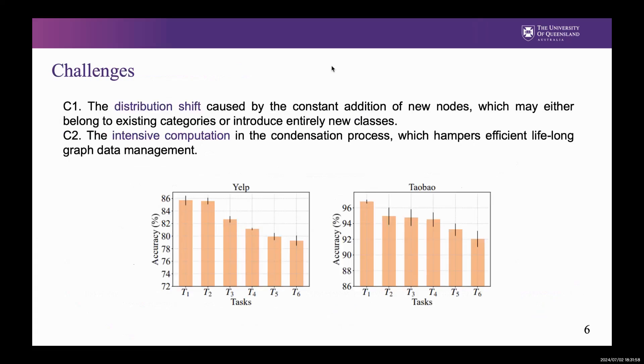We simulate the deployment of GC on two real-world evolving graphs, and observe a noticeable decline in each task, highlighting the distribution shift caused by newly added nodes and the limited generalization of GC. In addition, the condensation process is very complex and slow to converge, limiting lifelong graph data management.